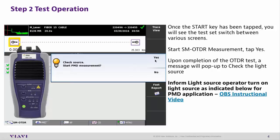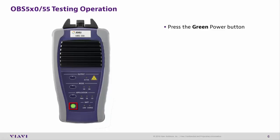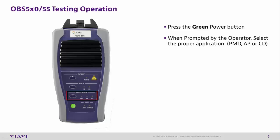Inform the light source operator to turn on the light source as indicated in the OBS instructional video. Optical Broadband Source Testing Operations: Press the green Power button. When prompted by the operator, select the appropriate application — PMD, AP, or CD. Press Active to turn the light source on when requested by the operator performing the test.